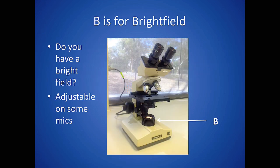B is for bright field. You can see where the arrow is pointing in the photograph — that indicates the part of the microscope we call the bright field. For some microscopes this is adjustable, and it's an important step in Köhler illumination, but that'll be the subject of another video.